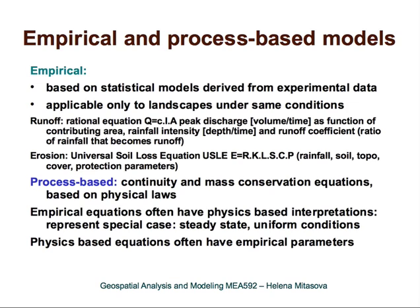What are empirical and process-based models? Empirical models are based on statistical relationships derived from experimental data. They are based on a number of experiments under given conditions, and the relationship between the modeled phenomena is derived using statistical tools. The disadvantage is that they are applicable only to landscapes and conditions that were used for the experiments, so their applicability is rather limited unless a large number of experiments are done under very different conditions.